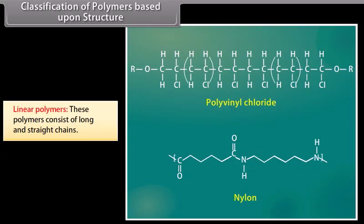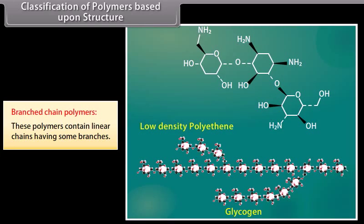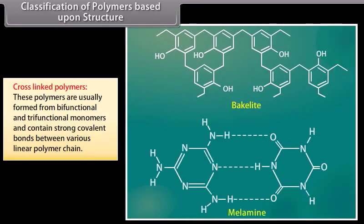Classification of polymers based upon structure has three subcategories. Linear polymers consist of long and straight chains — for example, polyvinyl chloride and nylon. Branched chain polymers contain linear chains having some branches — for example, low-density polyethene and glycogen. Cross-linked polymers are usually formed from bifunctional and trifunctional monomers and contain strong covalent bonds between various linear polymer chains — for example, bakelite and melamine.